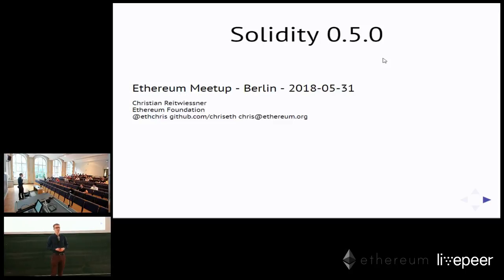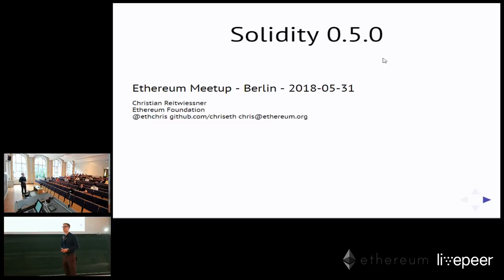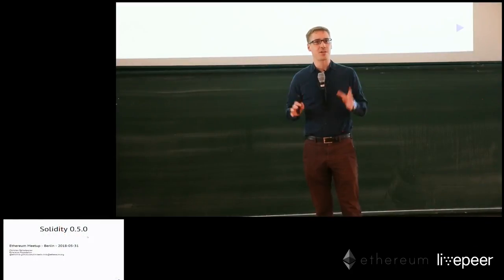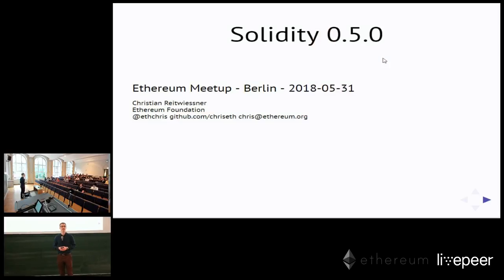This is special because we follow the semantic versioning scheme, and this means 0.5.0 is a breaking change. The last breaking change was in something around October 2016, so quite some things happened since then. I will mostly talk about the actual breaking changes and not the features that happened in the 25 releases we've had since then.